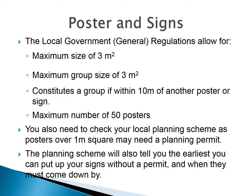There are provisions constraining the display of posters and signs within the Local Government Regulations 2015. The regulations allow for a maximum poster size of 3 metres squared, or a maximum group size of 3 metres squared. A group is constituted when posters or signs are placed within 10 metres of each other. You are not allowed to display more than 50 posters or signs. You also need to check your local planning scheme, as some schemes will require a permit for any posters over 1 metre squared. They also tell you when you can put up your signs without a permit and when they must come down by. The requirements under the planning scheme do vary from municipality to municipality, so check with your council.